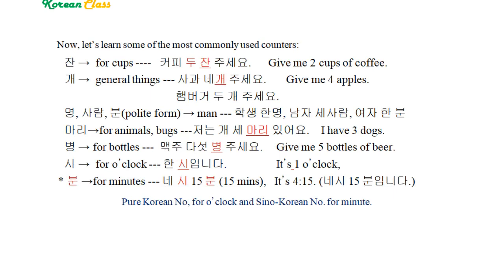Let's learn some of the most commonly used counters. 잔 is for cups: 커피 두 잔, 커피 세 잔. 개 is for general things: 사과 네 개 주세요, 햄버거 두 개 주세요. 명 and 사람 are for humans. But 분 is the honorific form, so when talking about a respected person use 한 분, 두 분, 세 분, 네 분 — not 한 명, 두 명, 세 명, 네 명. Otherwise 명 and 사람 are the same: 학생 한 명, 학생 한 사람.